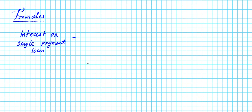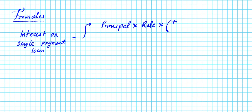I'll show you both formulas and then let's see if you can determine what the difference is between them. For exact interest, it is going to be the principal multiplied by the interest rate in decimal form, multiplied by the time divided by 365. This is how you compute the exact interest.